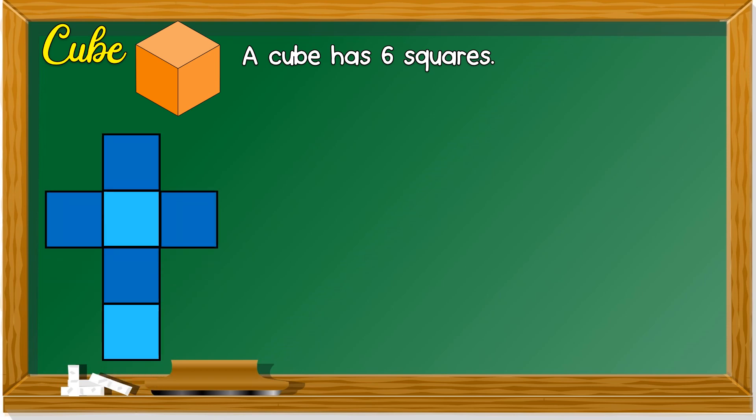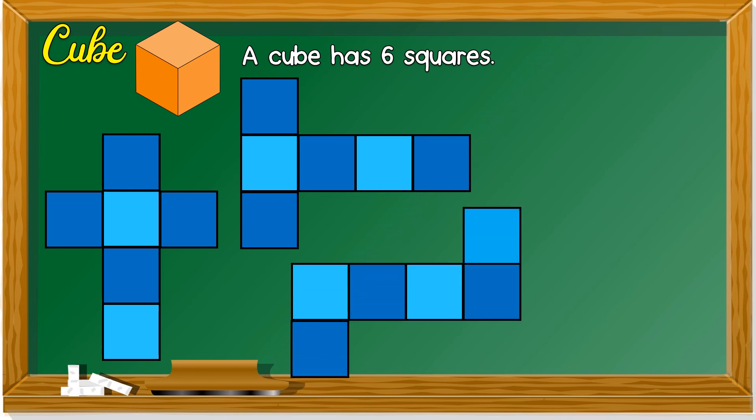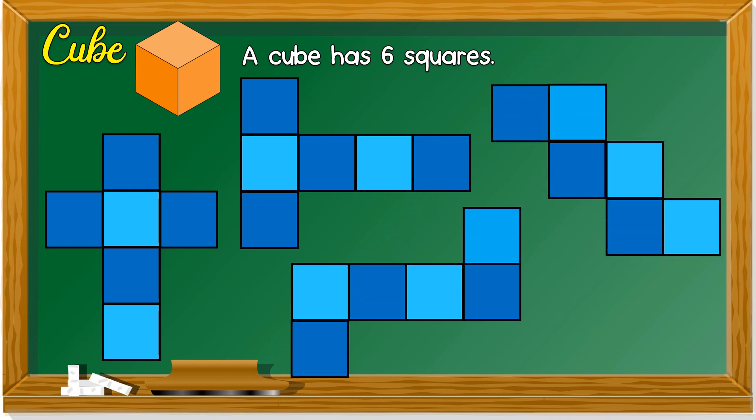The net can look like this, or like this, or like this — as long as when you fold it, it can become a cube. Net ialah template dia. Macam mana bila lepas kamu gunting dan lipat, kamu boleh membentuk cube.